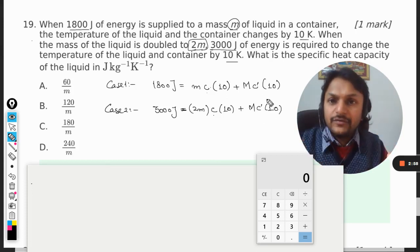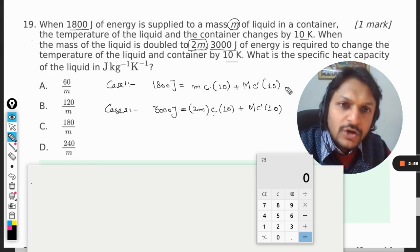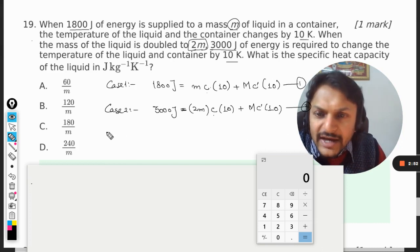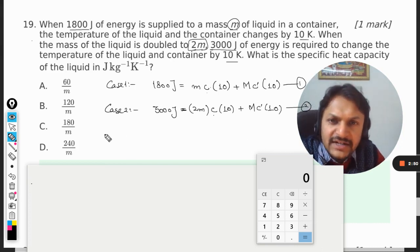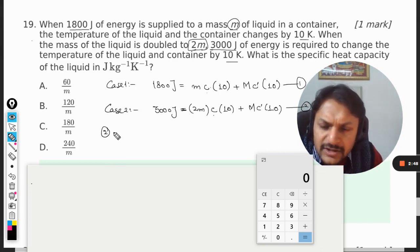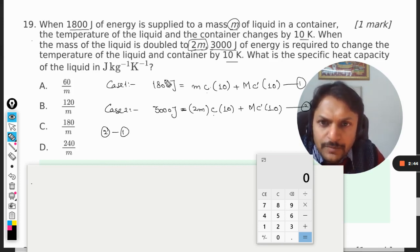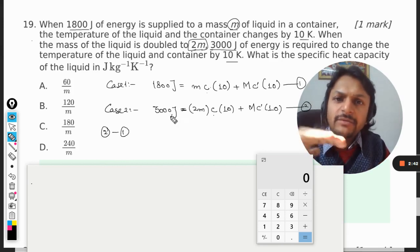But this is the irritant here. So how can we get rid of this? We can subtract these two. This will be the first equation, this can be taken as two, so I will say subtracting two minus one—subtracting one out of two. So we're subtracting the left-hand side from left-hand side, right-hand side from right-hand side.